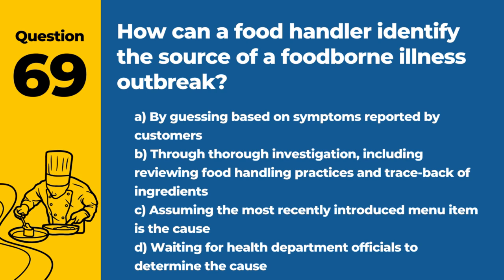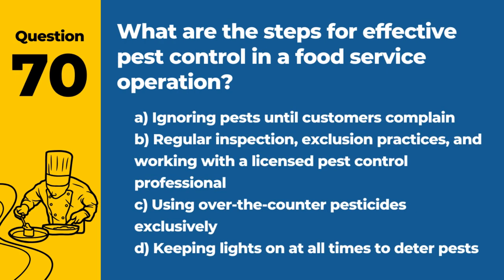Question 69. How can a food handler identify the source of a foodborne illness outbreak? The answer is B: Through thorough investigation, including reviewing food handling practices and traceback of ingredients. Identifying the source is crucial for preventing further cases.